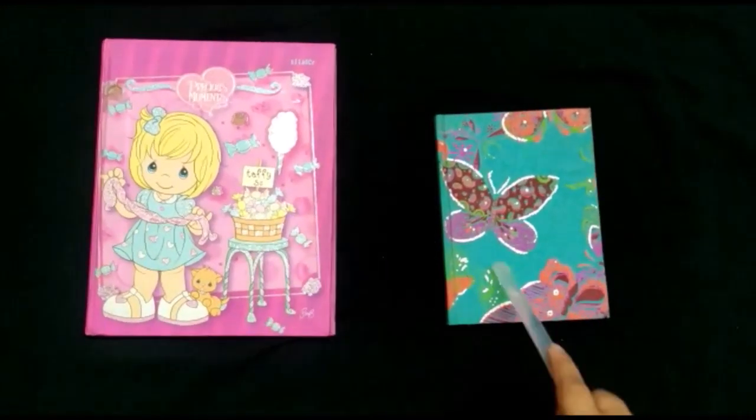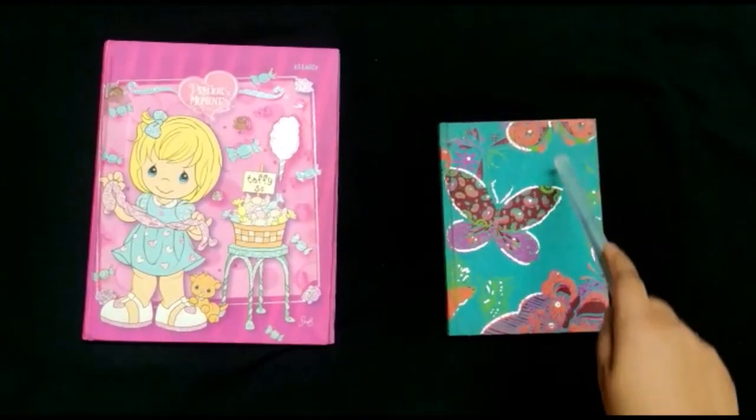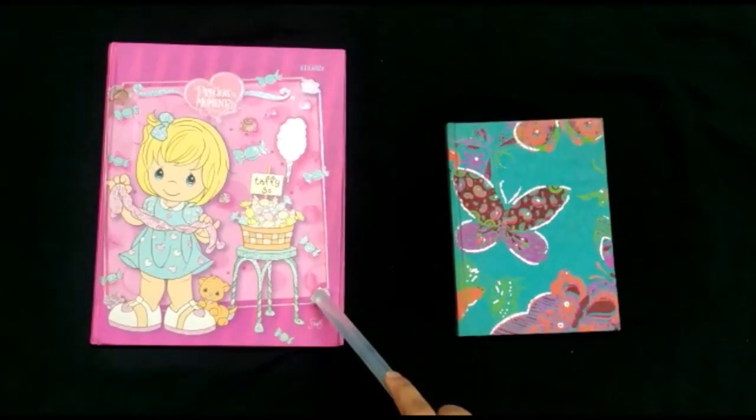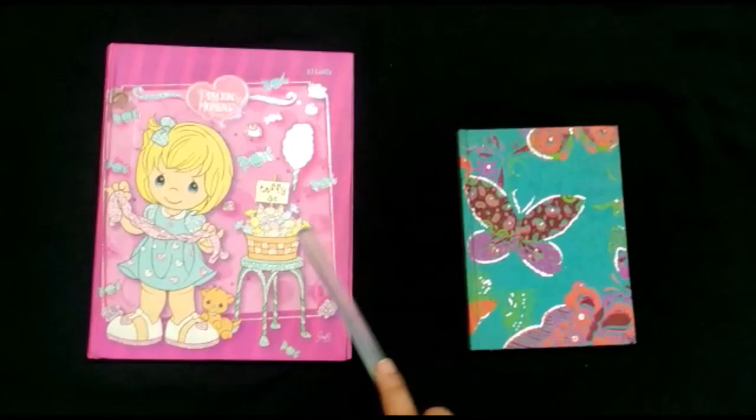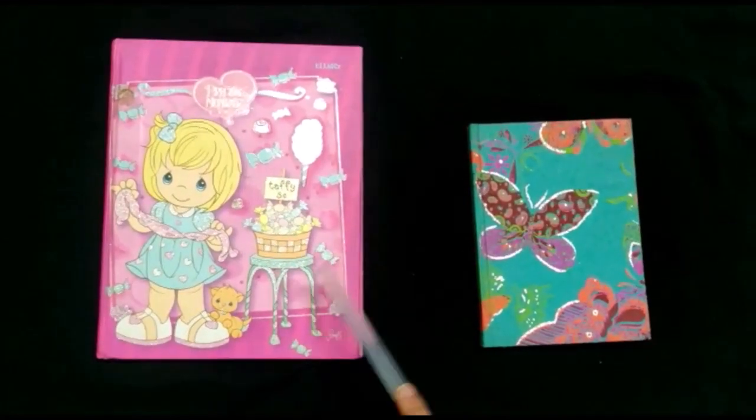There are two books. This book is small in size and this is big in size. When we compare two objects, we get big and small.